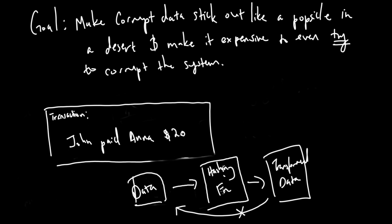The hashing function always produces the same output for the same input. But if you have some input that's only slightly different than another input, the output is still completely different — for our purposes, basically random. But for each input, the output is always the same, no matter how many times you run it through.